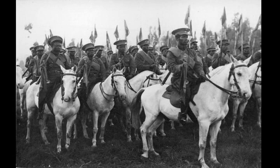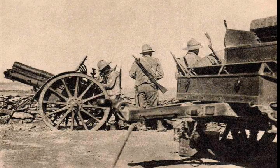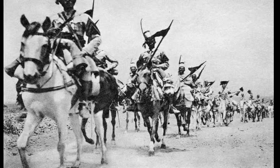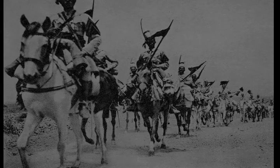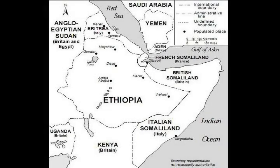Even as the Ethiopians advanced, Graziani continued his preparations. He organized his forces into three columns: on the right, advancing up the valley of the Ganael Doria River; in the center, advancing towards Filtu; and on the left, advancing up the valley of the Doria River. All three columns had access to motor transport, were equipped with a few tanks, and could be considered mechanized by the standards of 1936. In addition, Graziani had at his disposal the 7th Bomber Wing of the Royal Air Force. On 12 January, the Royal Air Force started the Italian response by dropping two tons of mustard gas on the Ethiopians, and for three days the advancing Ethiopians were attacked incessantly from the air.